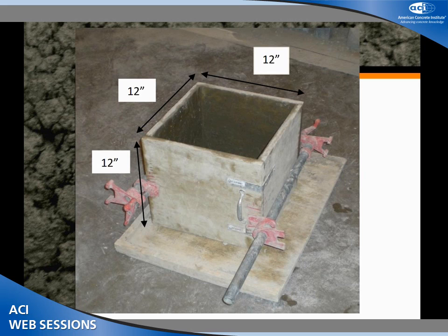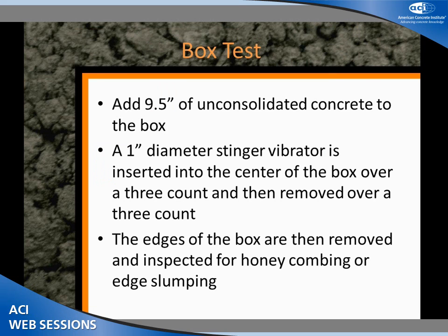We came up with the box test. This is a very simple test made up of two L-shapes made of wood — 12 inches by 12 inches by 12 inches. These two L's are held together by pipe clamps — about $20 from Home Depot. We are going to fill this box up with nine and a half inches of unconsolidated concrete. There is a hole in the top and a hole in the bottom.